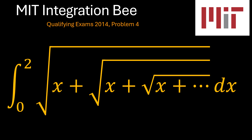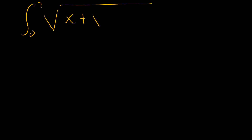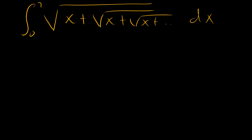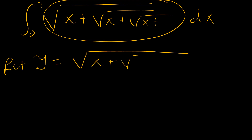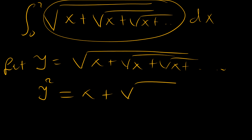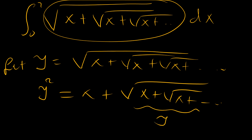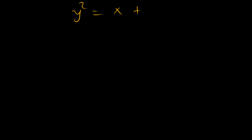Let's see how we may be able to solve this. This is our problem: x plus square root of x plus square root of x plus, and so on. Let's look at our integrand and let y be equal to that infinite nested radical. When we square both sides, we get y squared equals x plus square root of x plus square root of x plus — and we see this part is again y. So y squared equals x plus y.